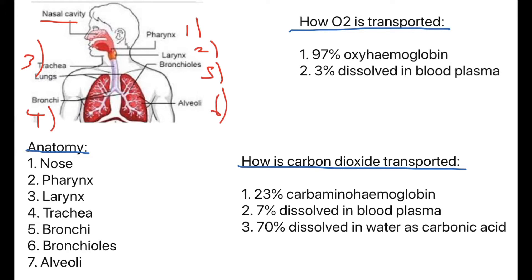Before jumping into the next part, let's look at how oxygen and carbon dioxide are transported. 97% of oxygen binds to haemoglobin to form oxyhaemoglobin and is transported to working muscles, while only 3% is dissolved in blood plasma. For carbon dioxide, 23% binds with haemoglobin to form carbaaminohaemoglobin, 7% is dissolved in blood plasma, and 70% is dissolved in water as carbonic acid — this becomes important later when we look at the Bohr shift during exercise.